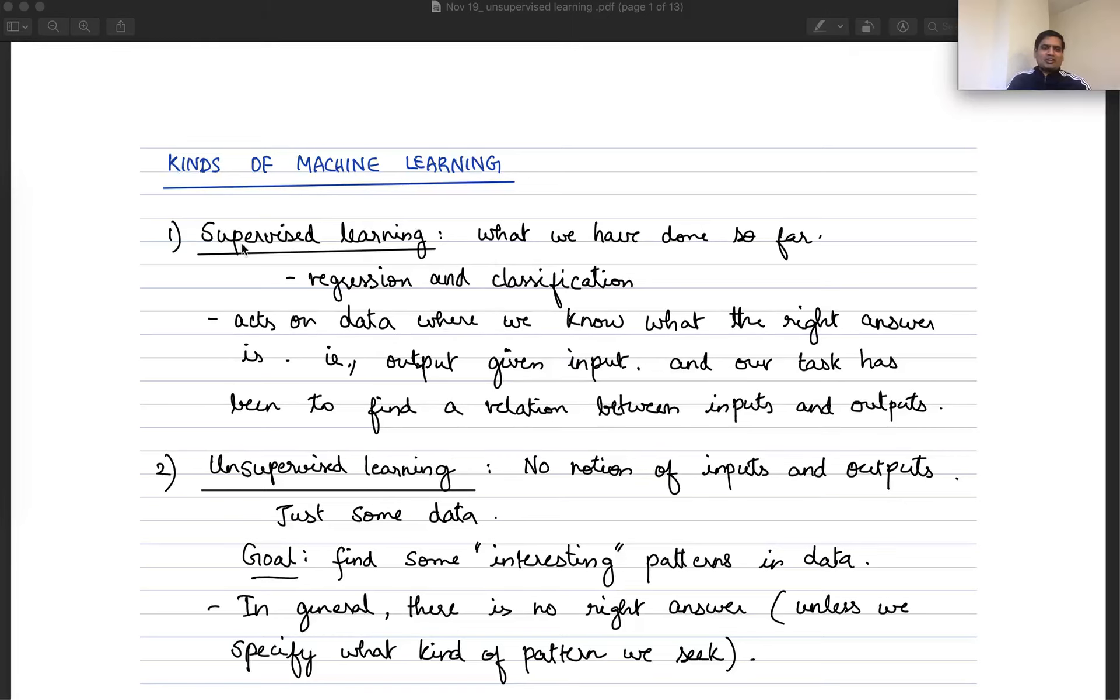So, so far, we mostly talked about supervised learning, right? So there's different kinds of machine learning. There's supervised learning, which is what we've looked at so far. Specifically, we've looked at regression and classification.